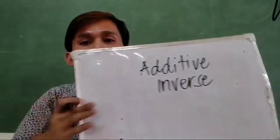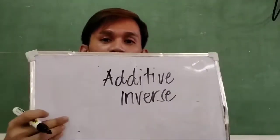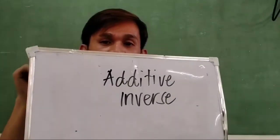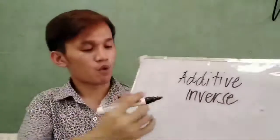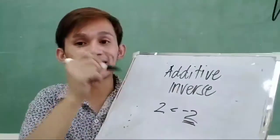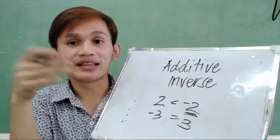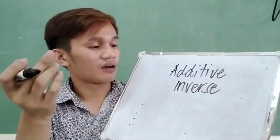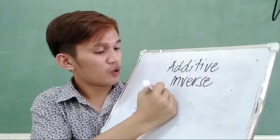So before we proceed, let us define what additive inverse is. When we say additive inverse, that is actually the opposite sign of the same number. So like for example, we have 2. The additive inverse of 2 is negative 2 — same number but opposite sign. Like for example, negative 3, the opposite of that number is positive 3. And that is the additive inverse. It is very important that you know this additive inverse.